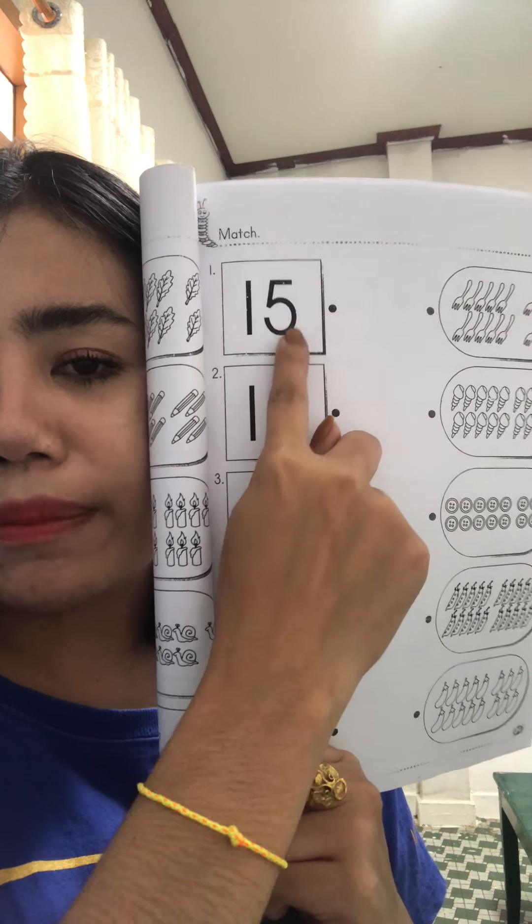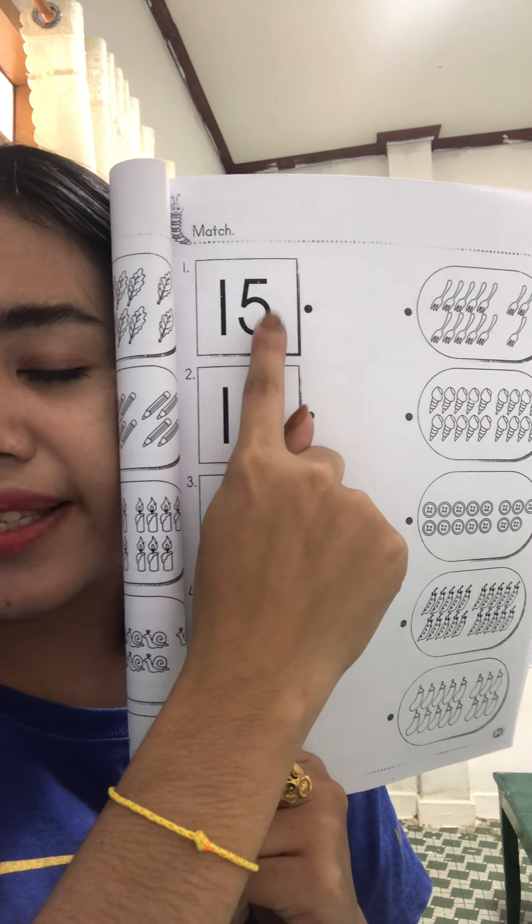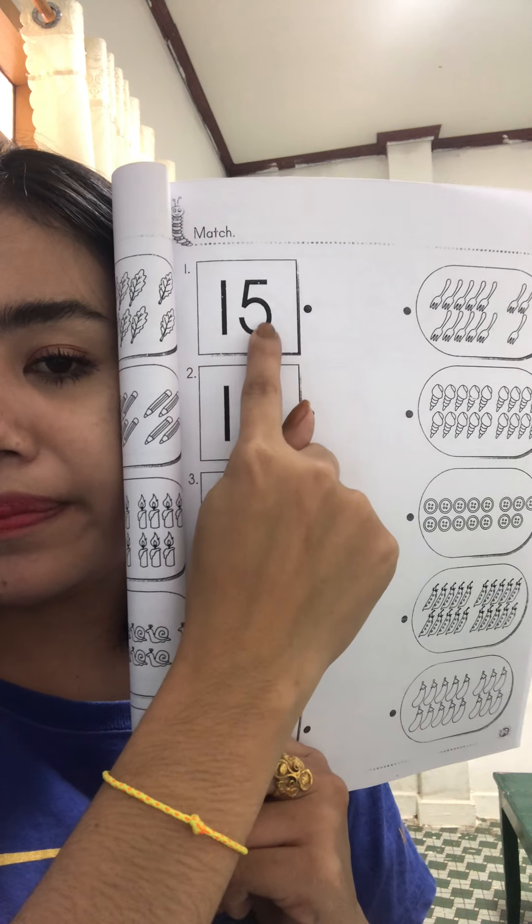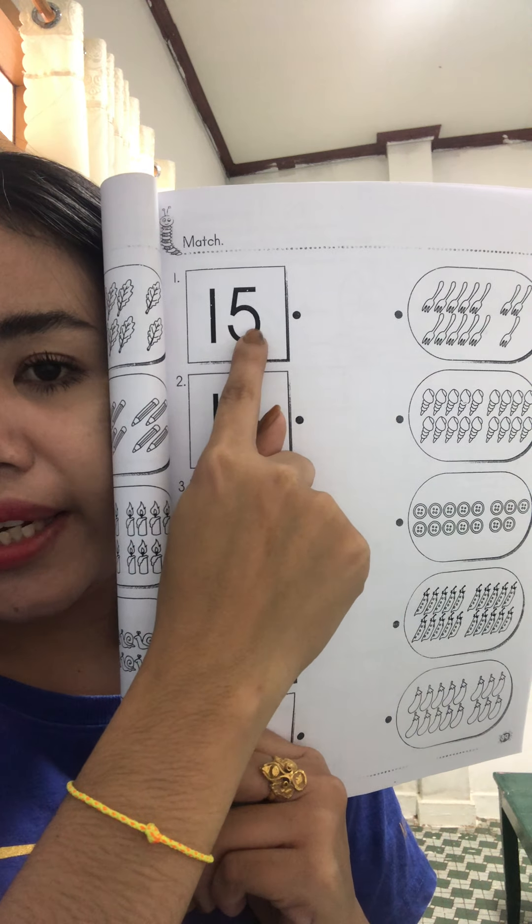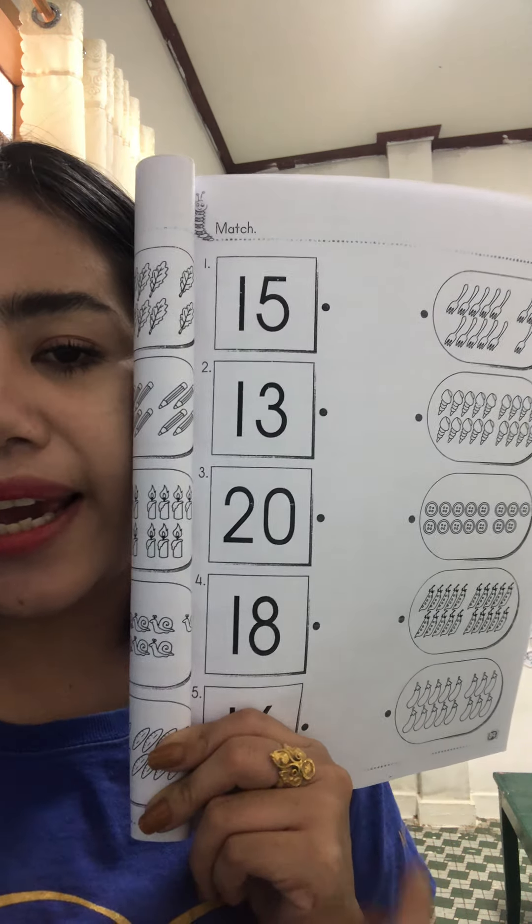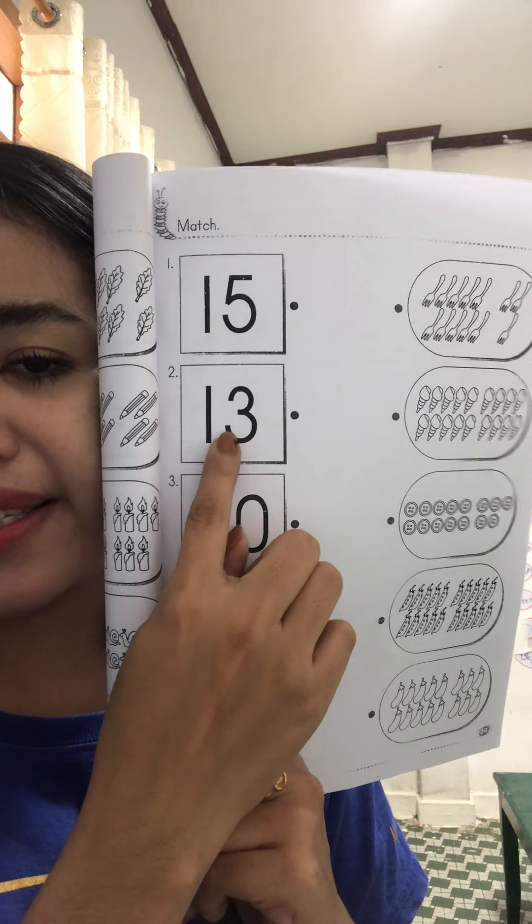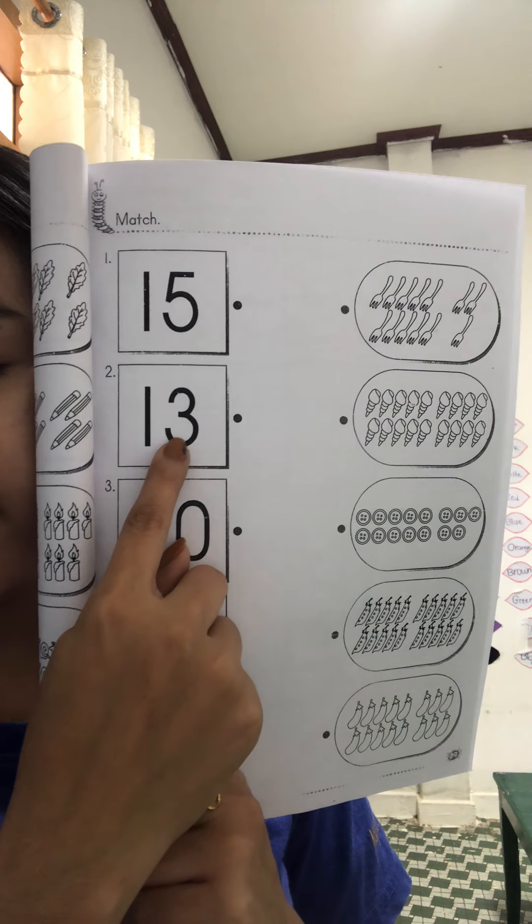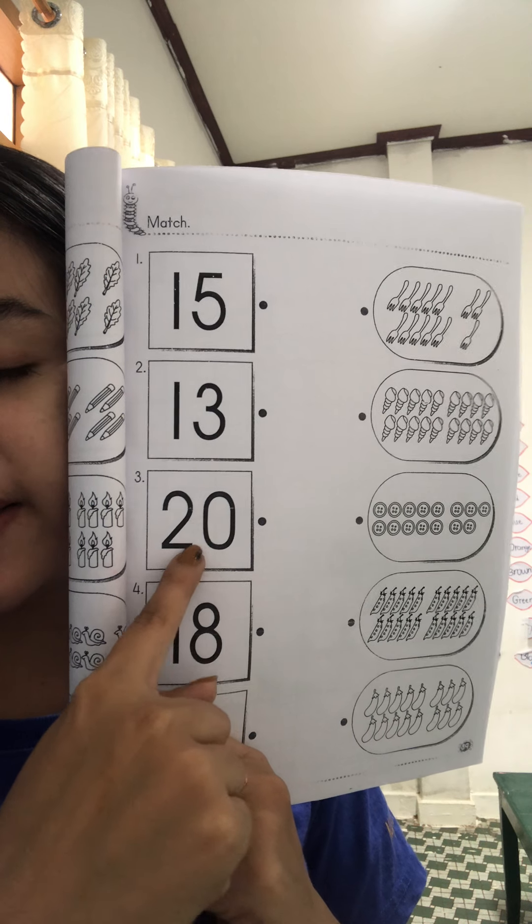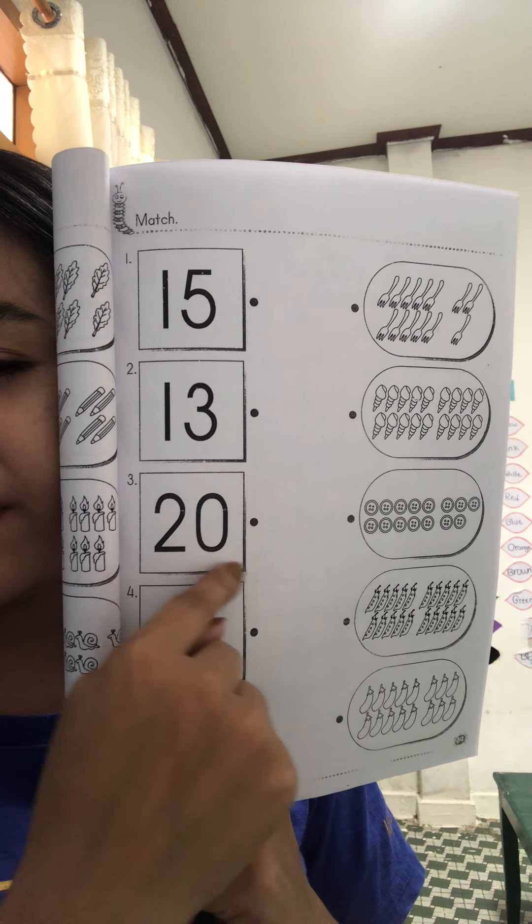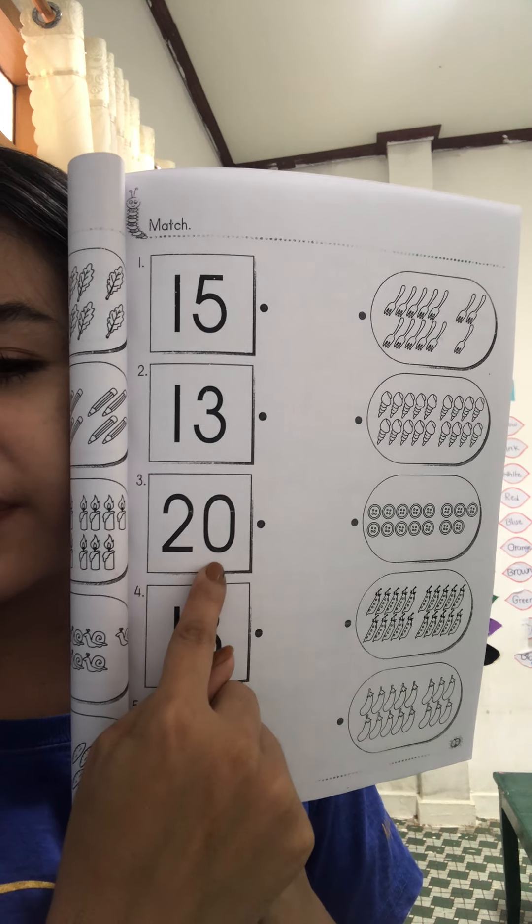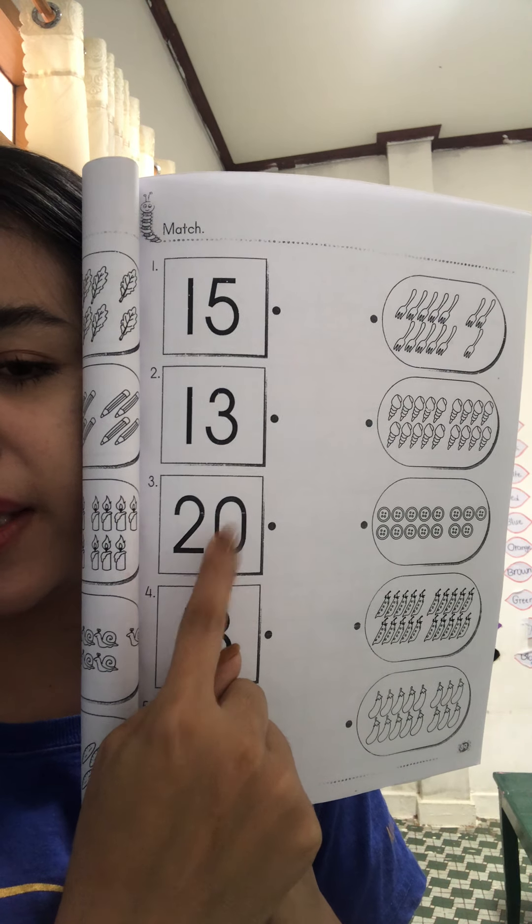Can you tell me what number is this? Yes, this is number 15. Yes, 15, okay. And this one, what number is this? This is number 13, okay. This is number, what number is this? This is number, yes, 20, okay.